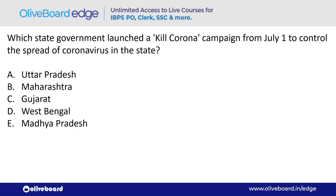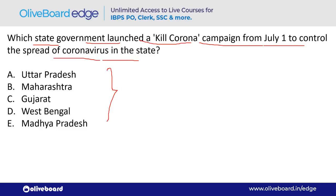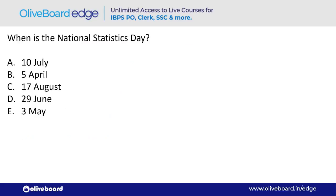Which state government launched a 'Kill Corona' campaign from July 1 to control the spread of coronavirus? The answer is Madhya Pradesh — option E.